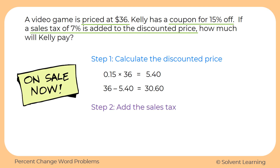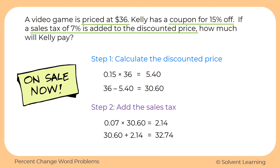Next we need to add the sales tax, which is 7%. They tell us the 7% is added to the discounted price, not the original price, so we apply it to $30.60, not $36. We calculate 7% of $30.60: 0.07 times $30.60 gives us $2.14. That gets added to the discounted price, so $30.60 plus $2.14 gives us $32.74. The total amount Kelly will pay for the video game is $32.74.